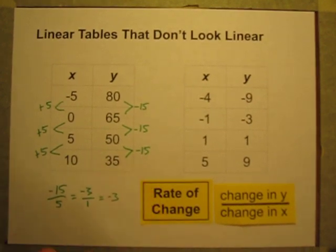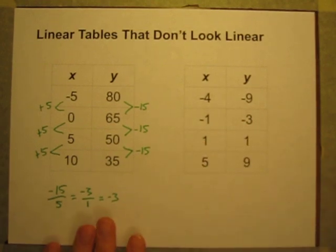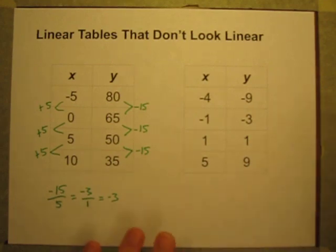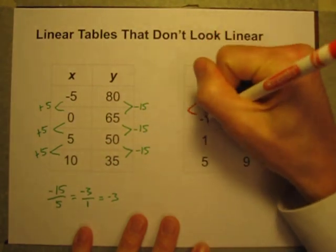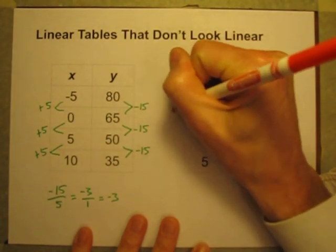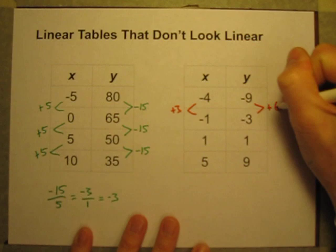So that table clearly linear. That one is not a sneaky linear one but how about this one? Let's see what's going on with this one. I can see here that the X values are going from negative 4 to negative 1. That's an increase of 3. My Y values are going from negative 9 to negative 3 which is an increase of 6.